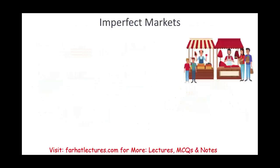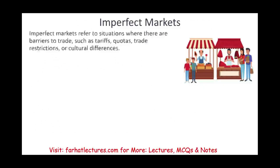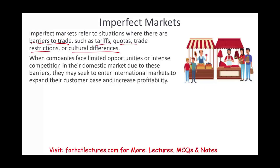Imperfect markets refer to situations where there are barriers to trade — tariffs, quotas, trade restrictions, or cultural differences — that prevent you from selling overseas. When a company faces limited opportunities or intense competition in their domestic market due to various barriers, one response is simply to go there — establish operations in that market directly.